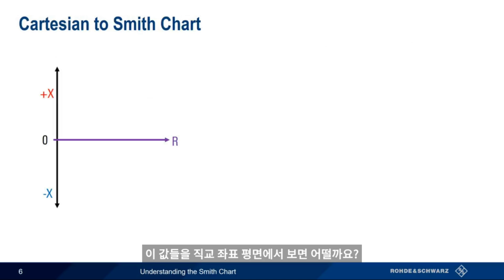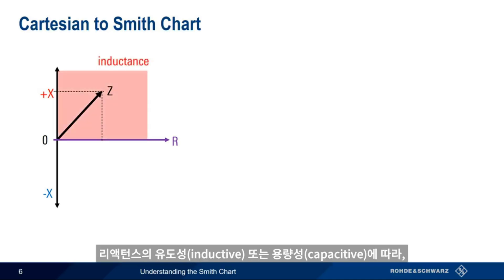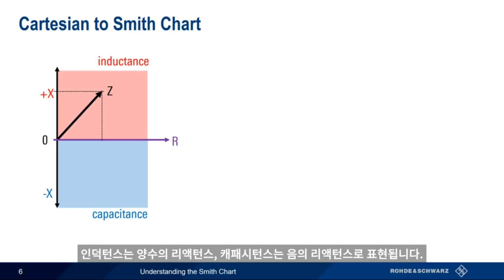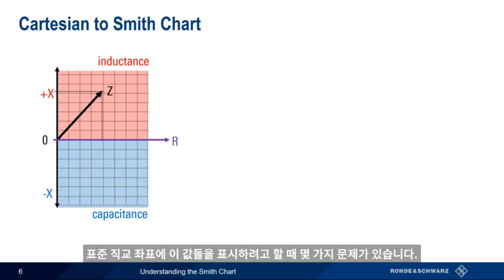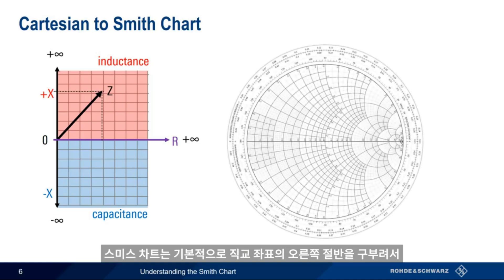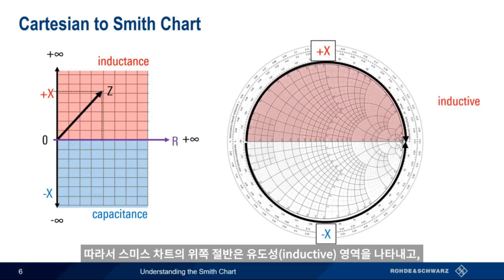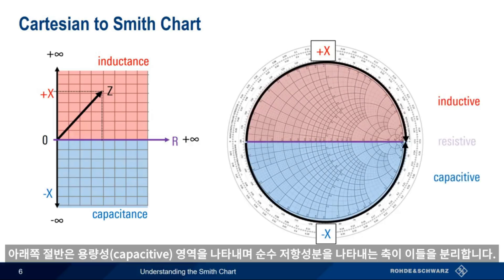Why not just show these values on the Cartesian coordinate plane? A complex impedance consists of a purely resistive part, R, as well as a reactive part, X. This reactance can be either inductive or capacitive, with inductance being a positive reactance and capacitance being a negative reactance. There are a couple of issues when trying to plot these values using the standard Cartesian coordinate plane. First, since resistance is always positive, we'll only ever use the right-hand plane. More importantly, both the impedance and resistance can range from zero to infinity. The Smith Chart essentially bends the right half of our Cartesian coordinate plane, such that the positive and negative reactance axes are curved around to meet the resistance axis. The top half of the Smith Chart represents the inductive region, and the bottom half represents the capacitive region, with a purely resistive axis separating them.